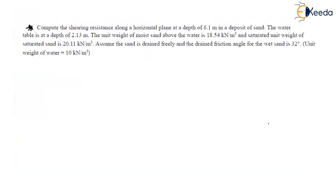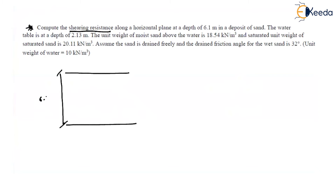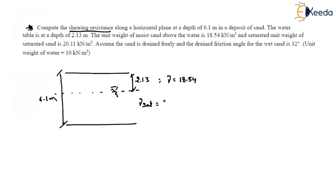Next question: Compute the shearing resistance along a horizontal plane at a depth of 6.1 m in a deposit of sand. The water table is at a depth of 2.13 m. The unit weight of moist sand above the water table is given, and the saturated unit weight below the water table is 20.1 kN/m³.